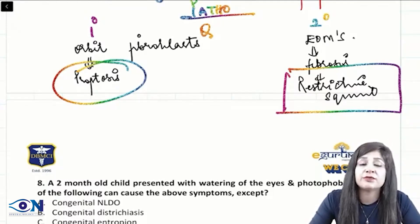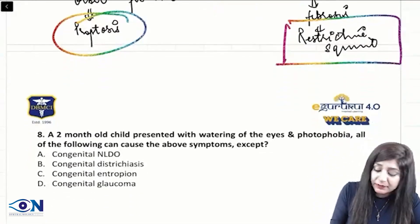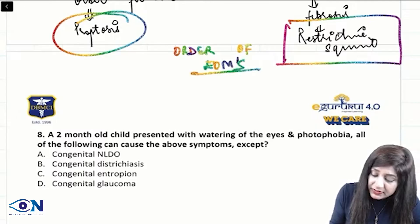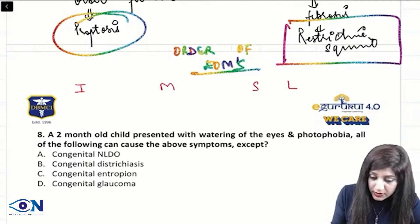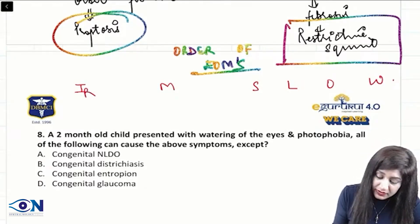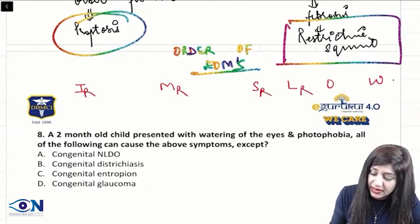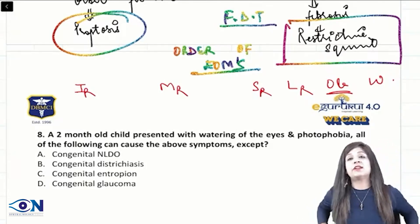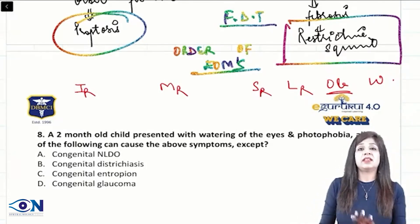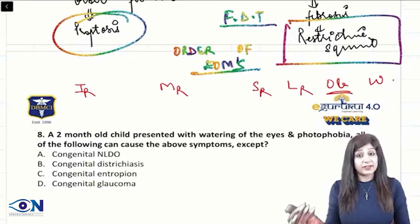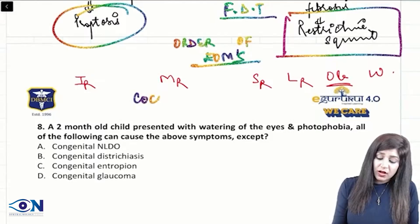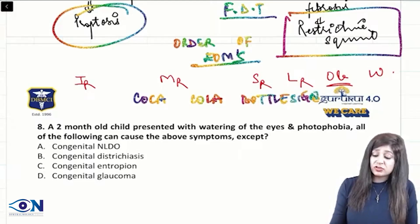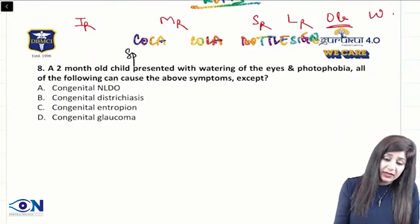To differentiate between restrictive squint and paralytic squint, you can do the force duction test. The order of extraocular muscles involved in thyroid eye disease is: inferior rectus, lateral rectus, superior rectus, lateral rectus, and the obliques. A very important sign seen on radio imaging is the coca-cola bottle sign.